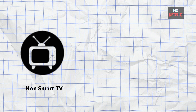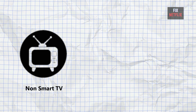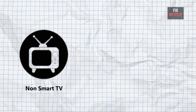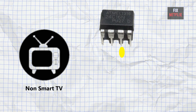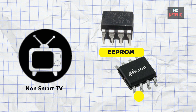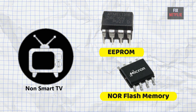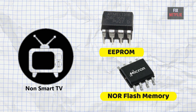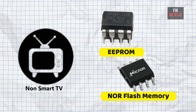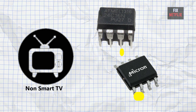Let's begin with non-smart TVs. These usually use two types of memory ICs: number one, EEPROM, and number two, NOR flash memory — this could be either SPI NOR or parallel NOR.